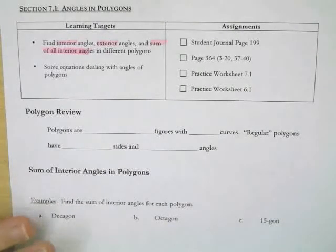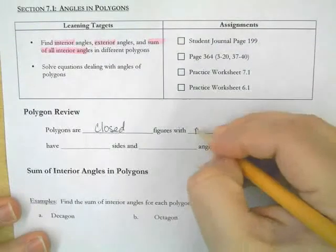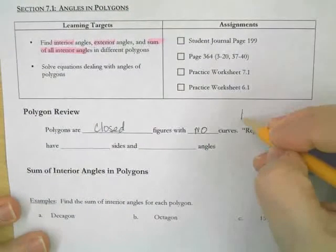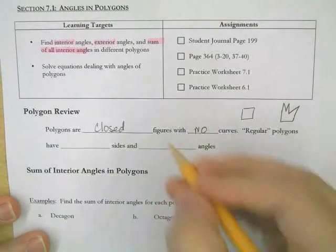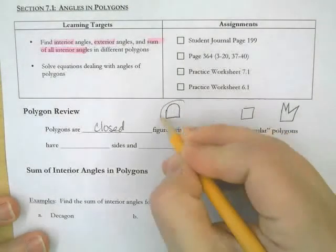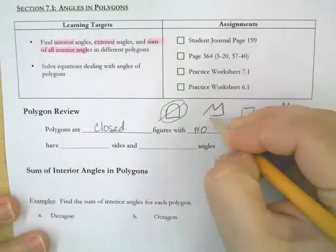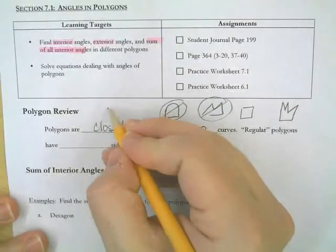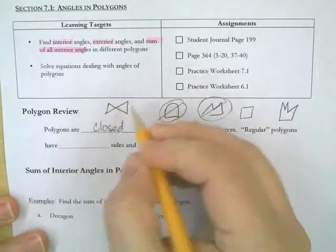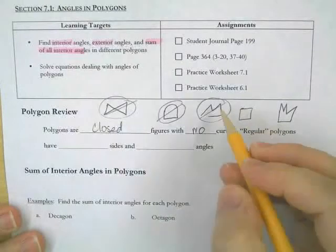First of all, polygon review. You learned about it earlier in the year, but we wanted to just recap so you remember. Polygons are closed figures with no curves. So it can be a square, it can be this crazy shape here like a crown. But you can't have curves — that doesn't work. And you can't have open spaces. Another good example of what doesn't work is two triangles connected — that's not one polygon, that's actually two. So here are a couple good examples and three non-examples.